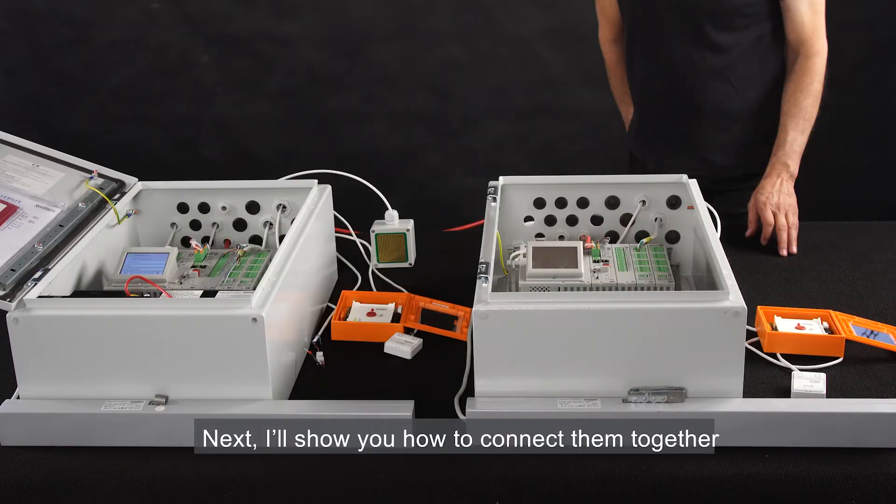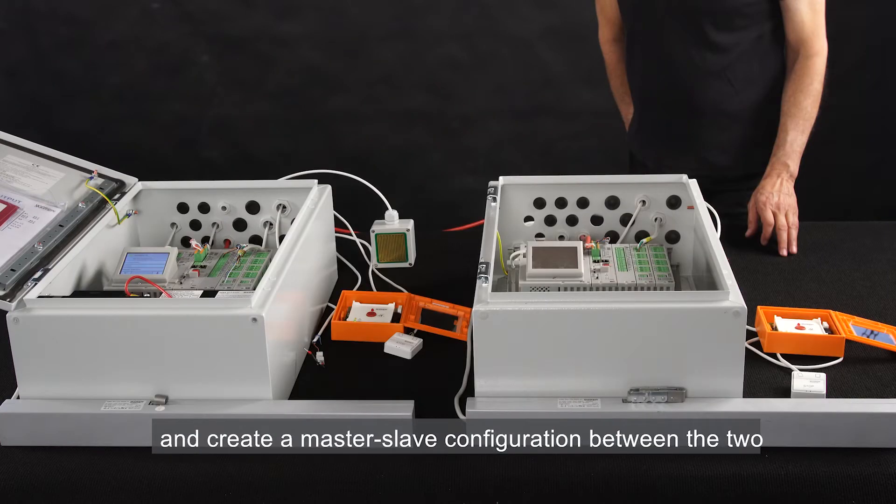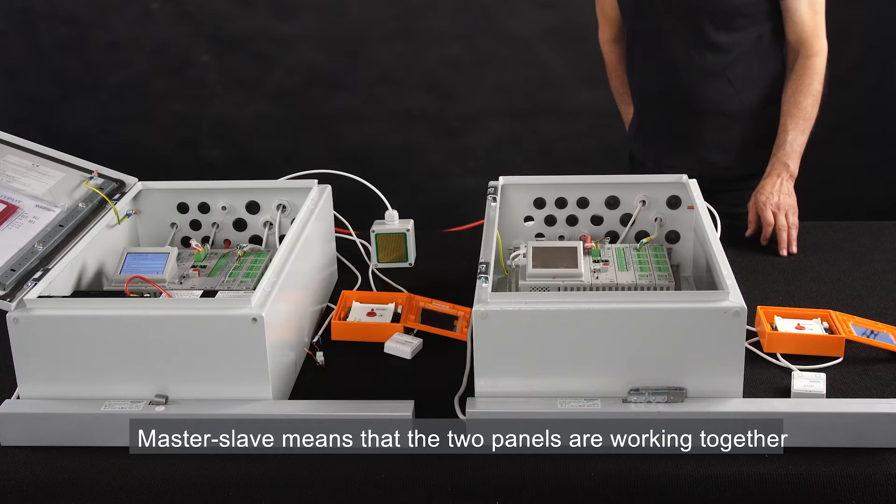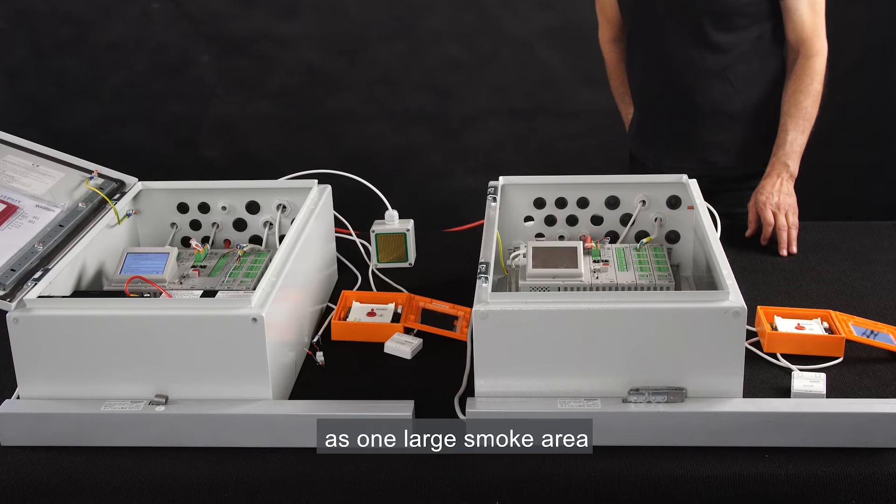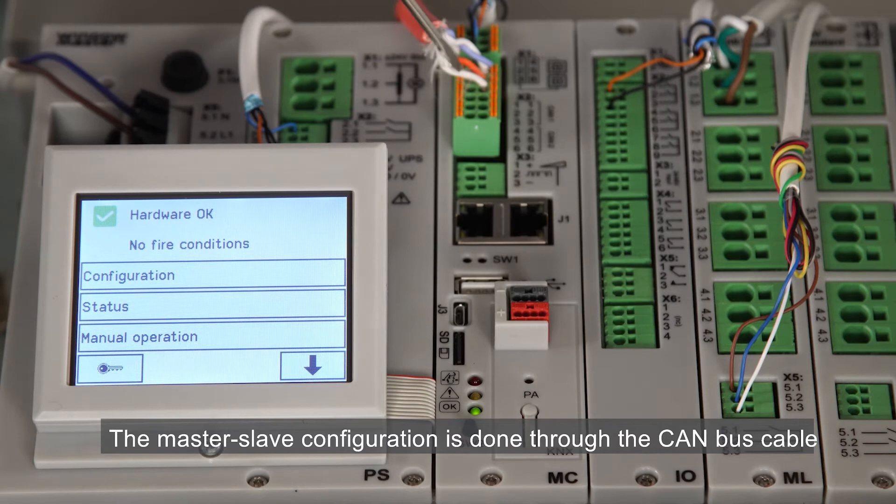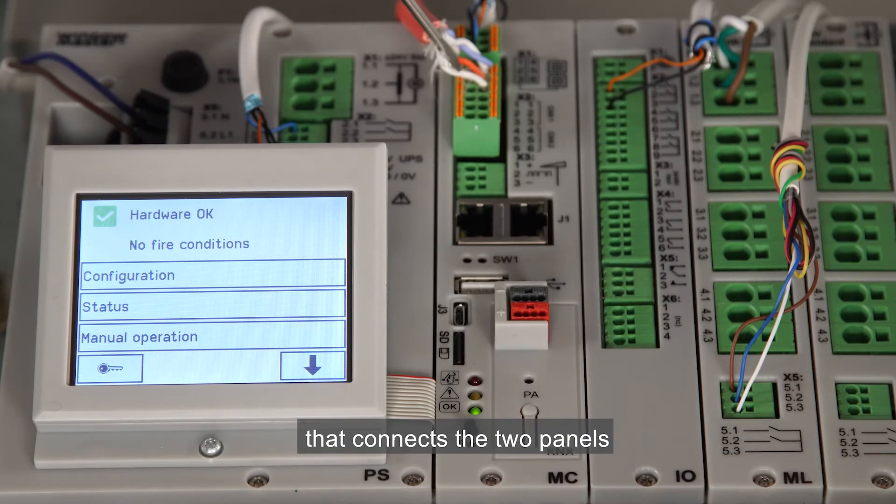Next, I'll show you how to connect them together and create a master-slave configuration between the two. Master-slave means that the two panels are working together as one large smoke area. The master-slave configuration is done through the CAN bus cable that connects the two panels.